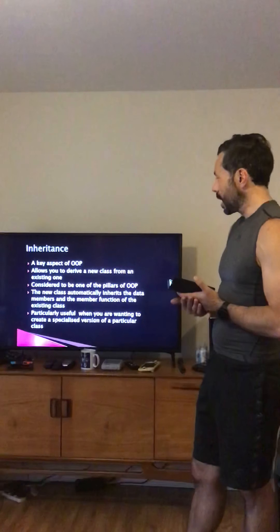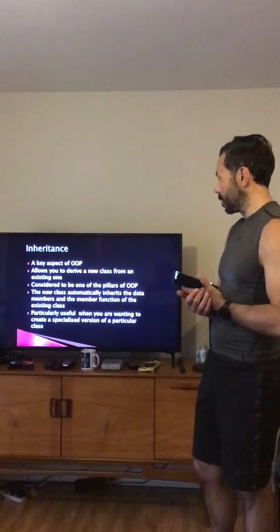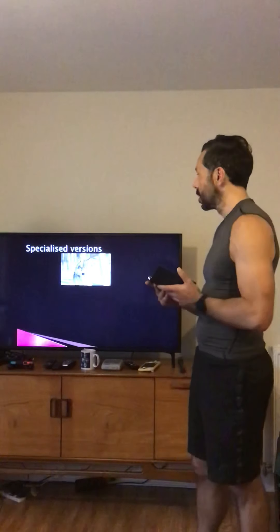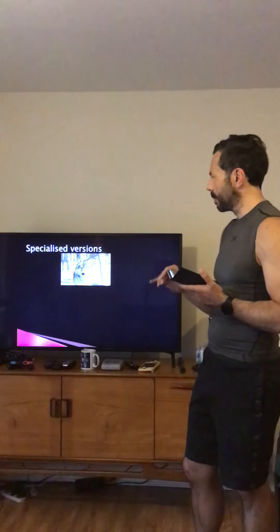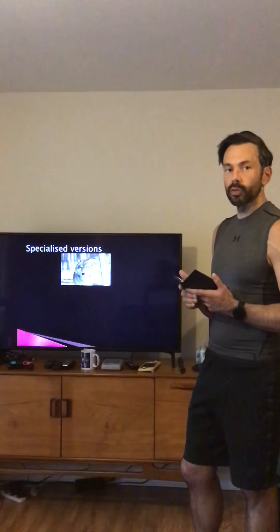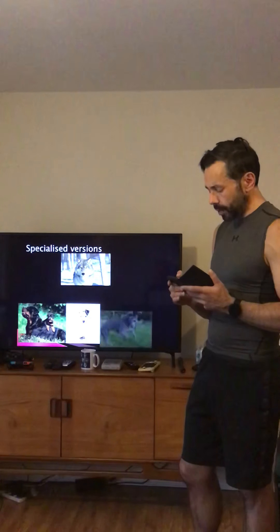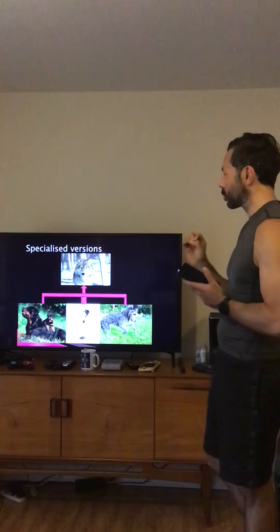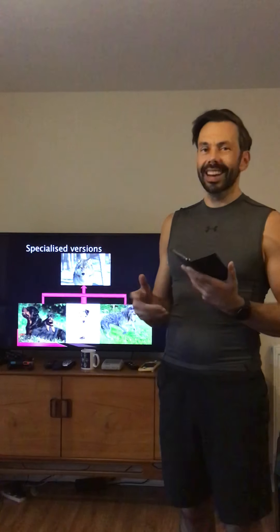A new class automatically inherits the data members and member functions of the existing class — it's particularly useful when creating a specialised version of a class. When talking about specialised versions, all domestic dog breeds are derived from the wolf. I've had a Rottweiler, a Jack Russell, and a Deerhound — they are all specialised versions of that base breed. They all look different and have particular genetic traits.